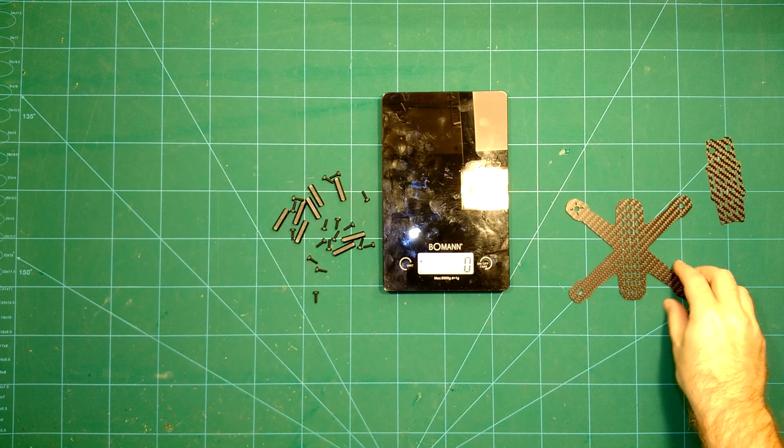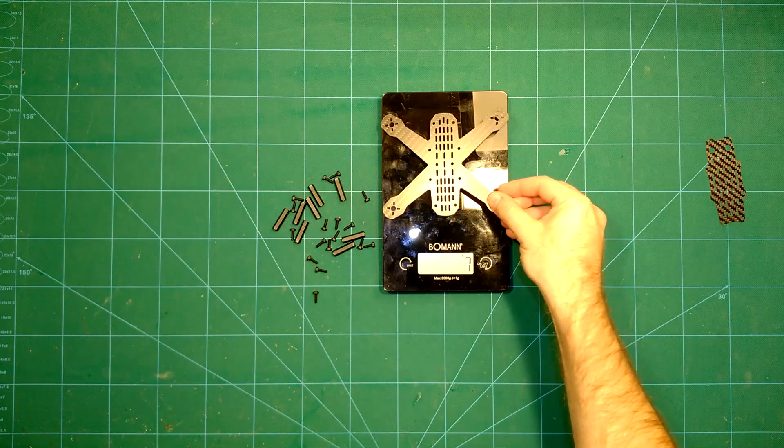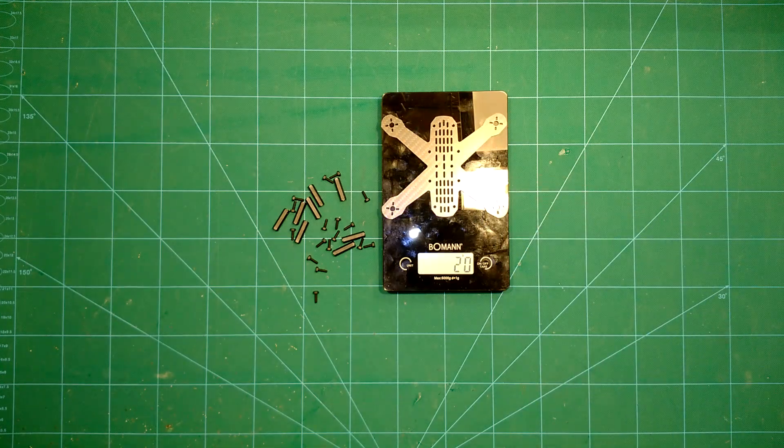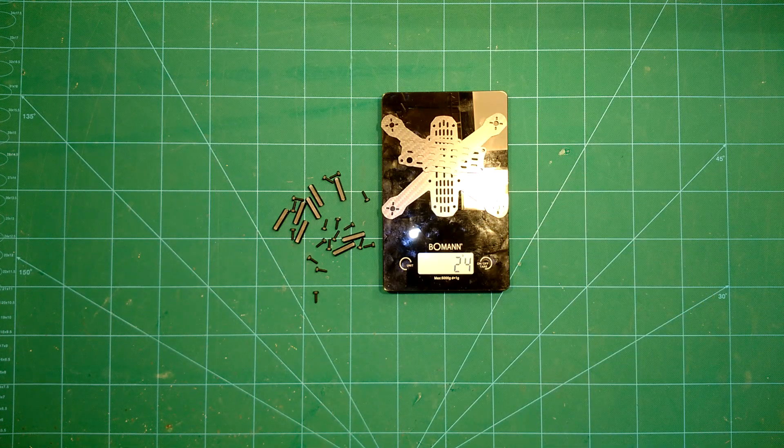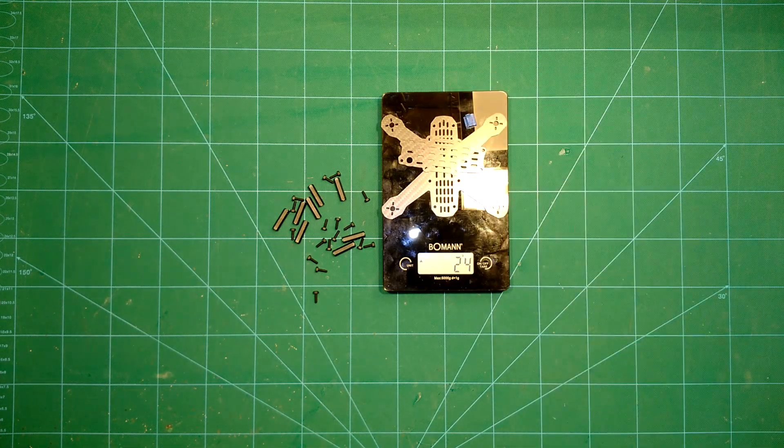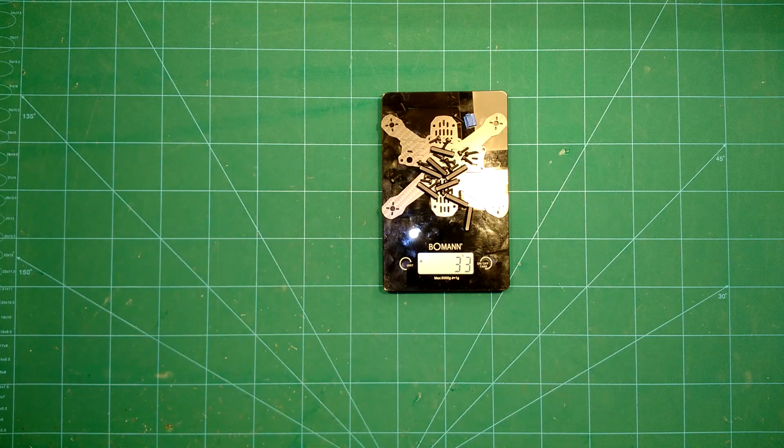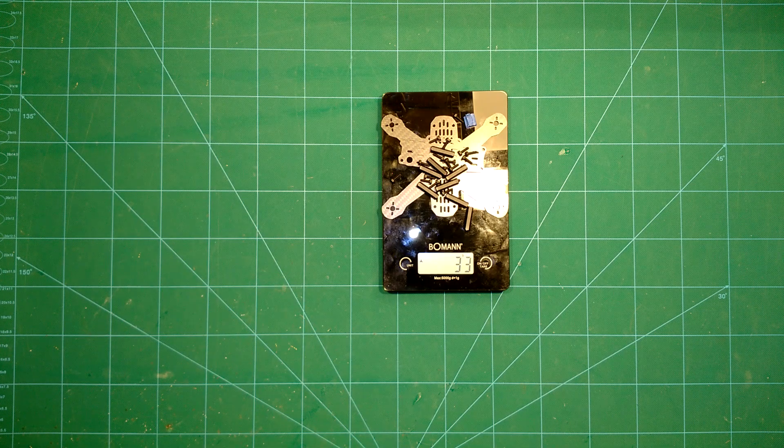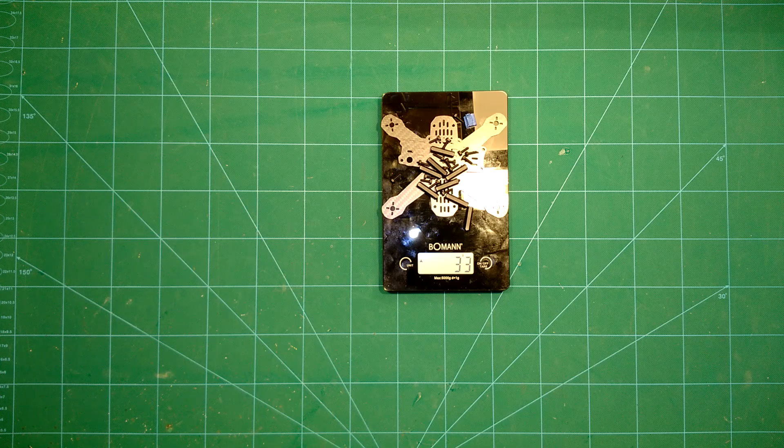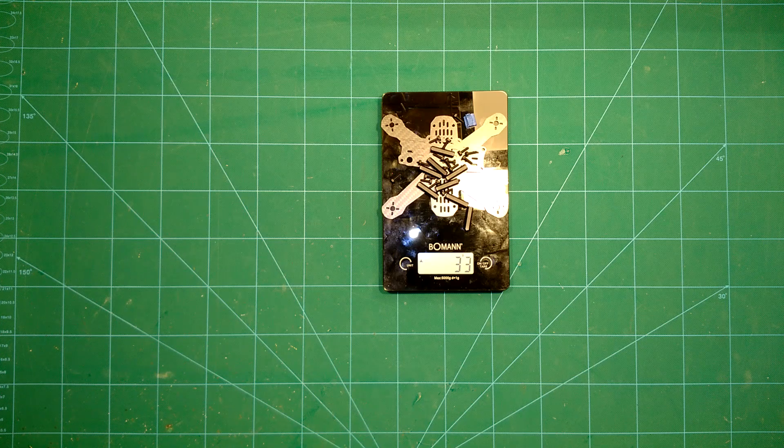What we will do now is we take the weight of all the parts. Let's see what the weight of this is. The bottom plate comes in at 20 grams, the top plate brings us to 24 grams, and we arrive at 33 grams for the bare frame here, which is pretty nice for a 140 size frame.